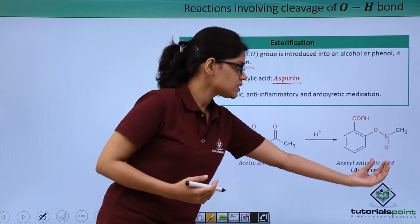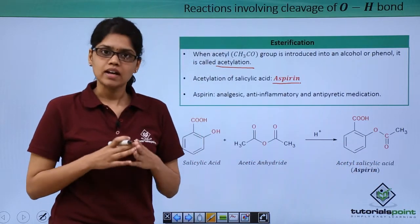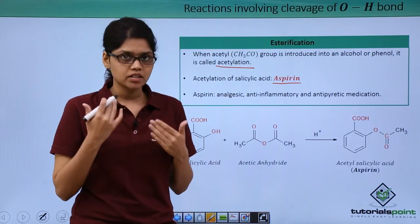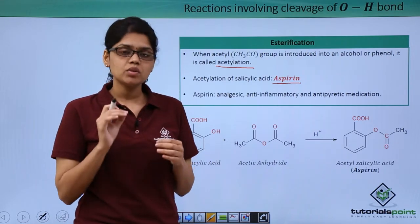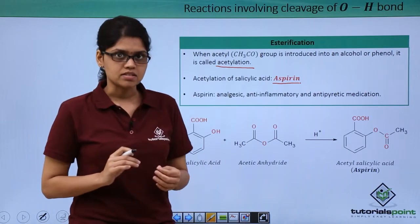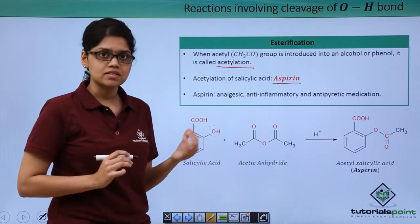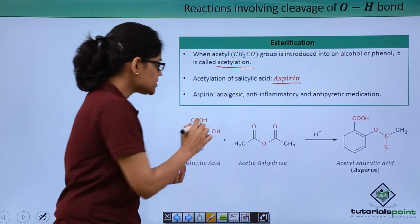The detailed mechanism of esterification will be dealt in your next chapter, but to give you a glimpse of what happens in the mechanism: here you can see that the oxygen is nucleophilic because it has lone pair of electrons, and this oxygen attacks, or the lone pair of electrons in this oxygen attacks, this carbon which is an electrophilic center.